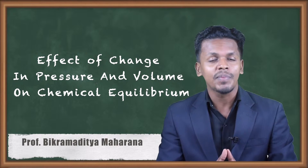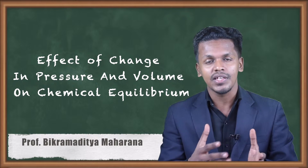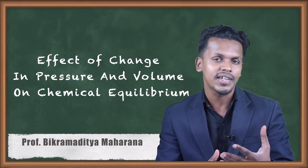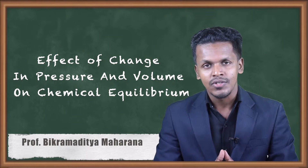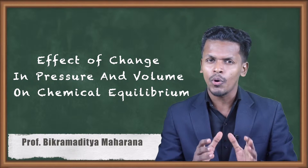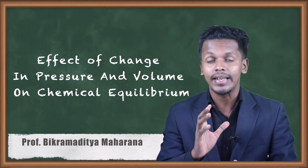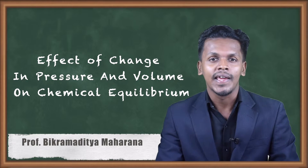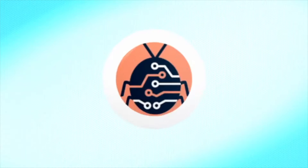So if we change these kinds of parameters, then obviously the reaction could be turned into a forward reaction or the reaction could be turned into a backward reaction. Following that, we are going to talk about what is the effect of pressure as well as volume on a reaction which is exhibiting chemical equilibrium.